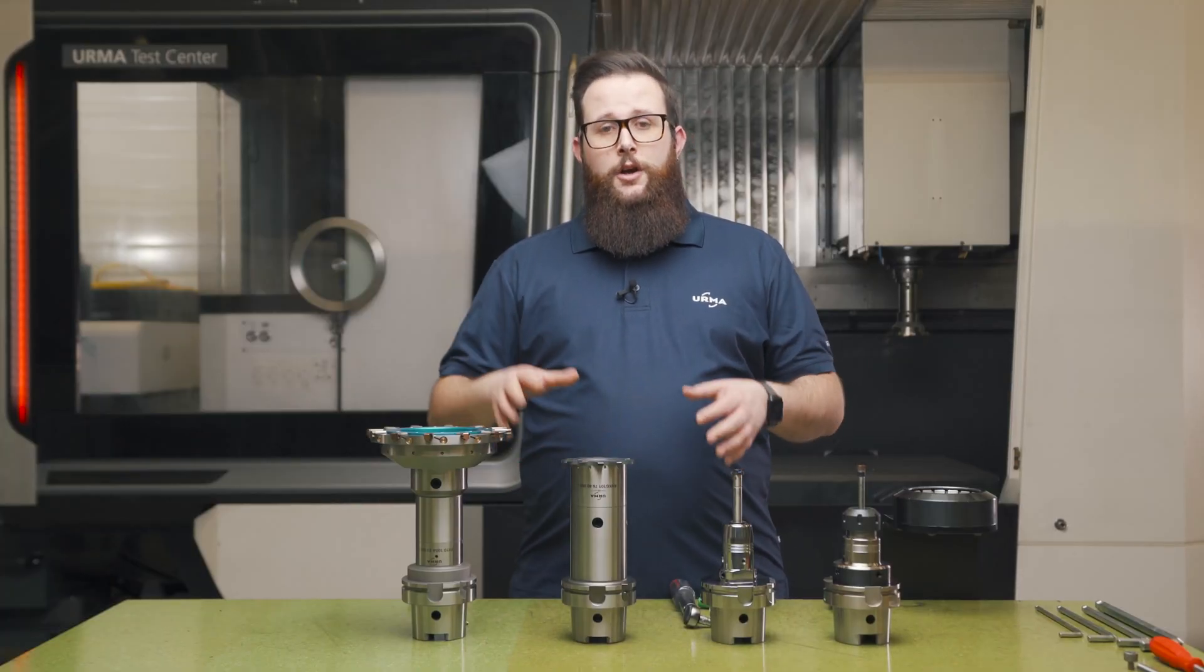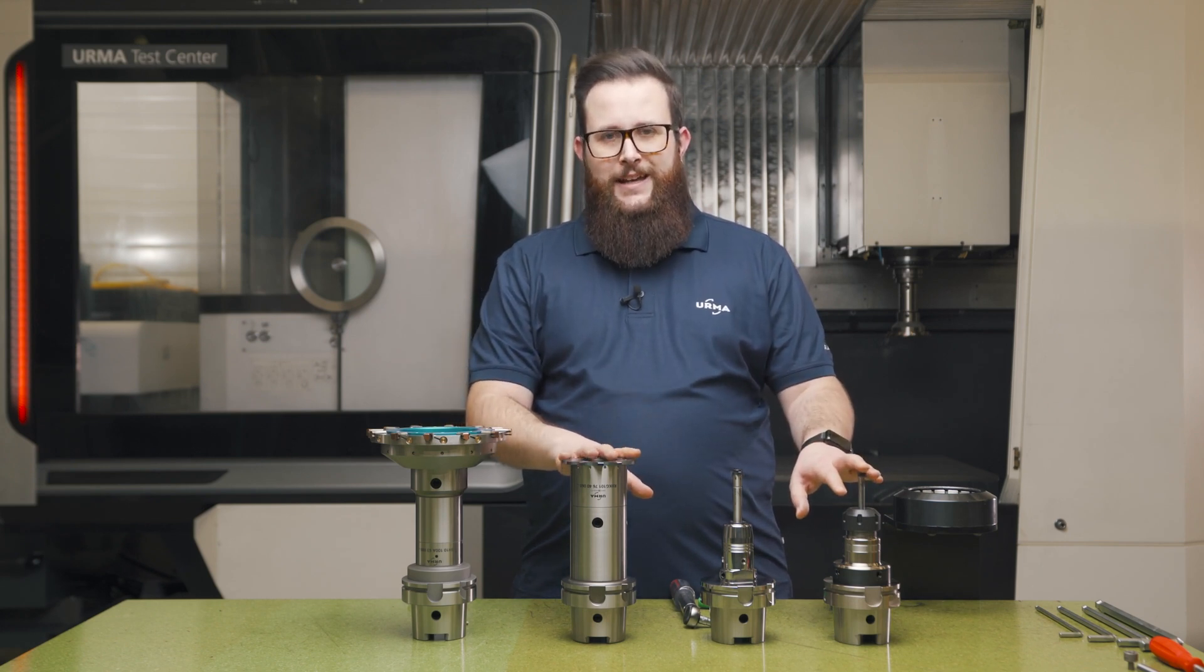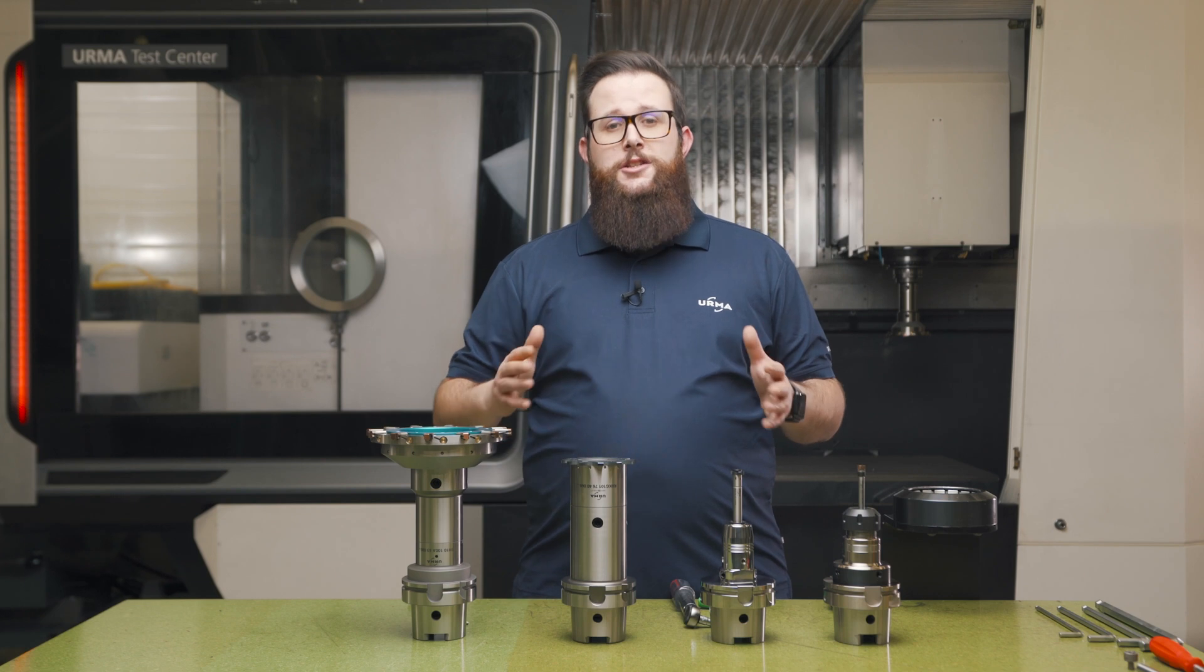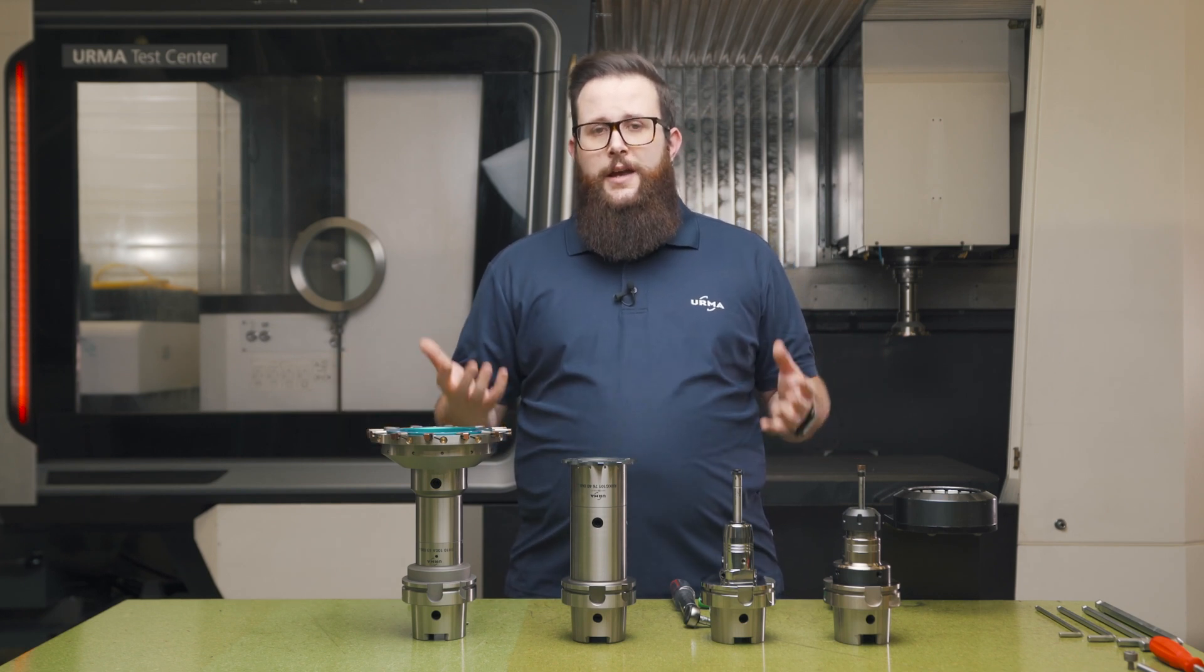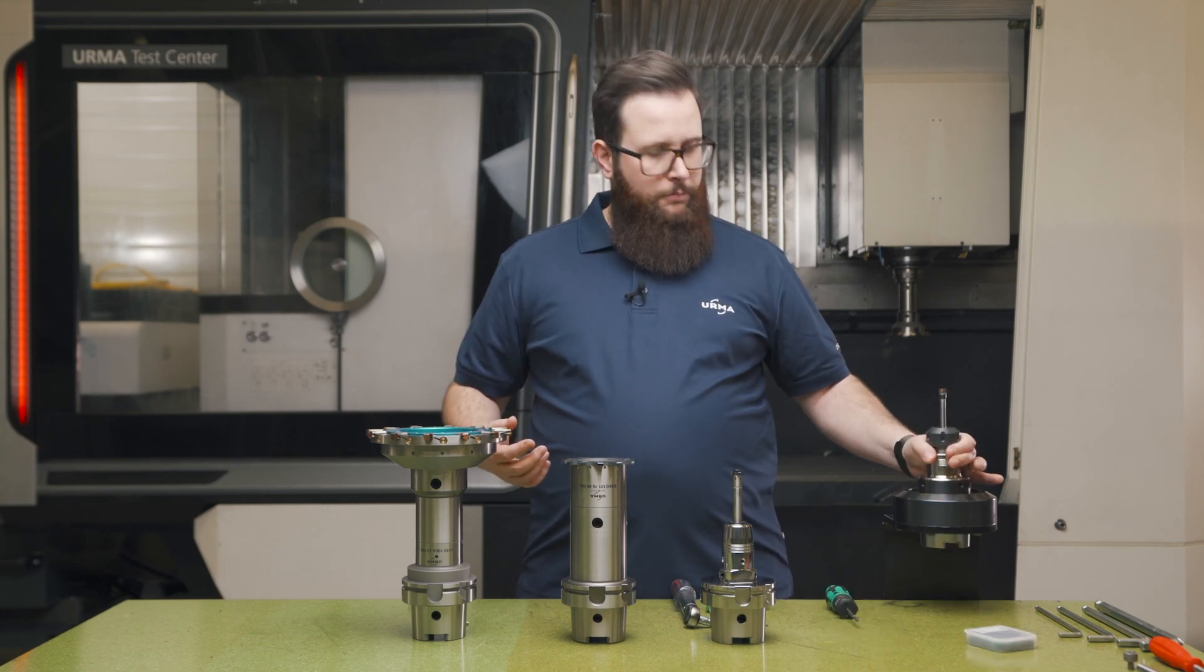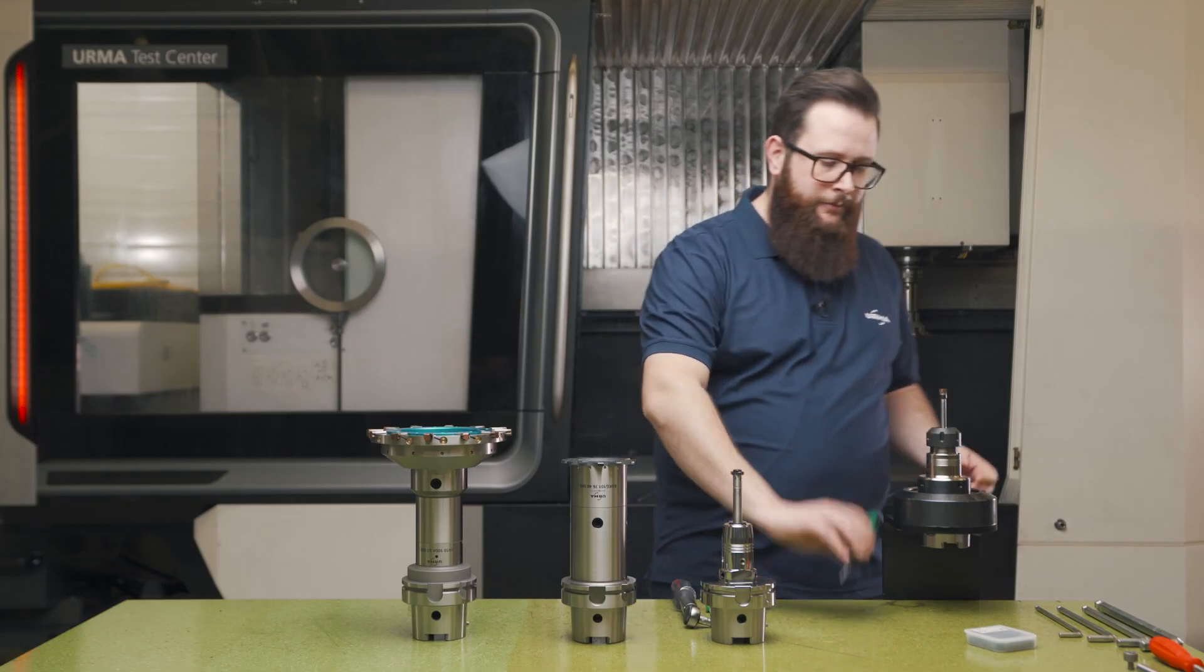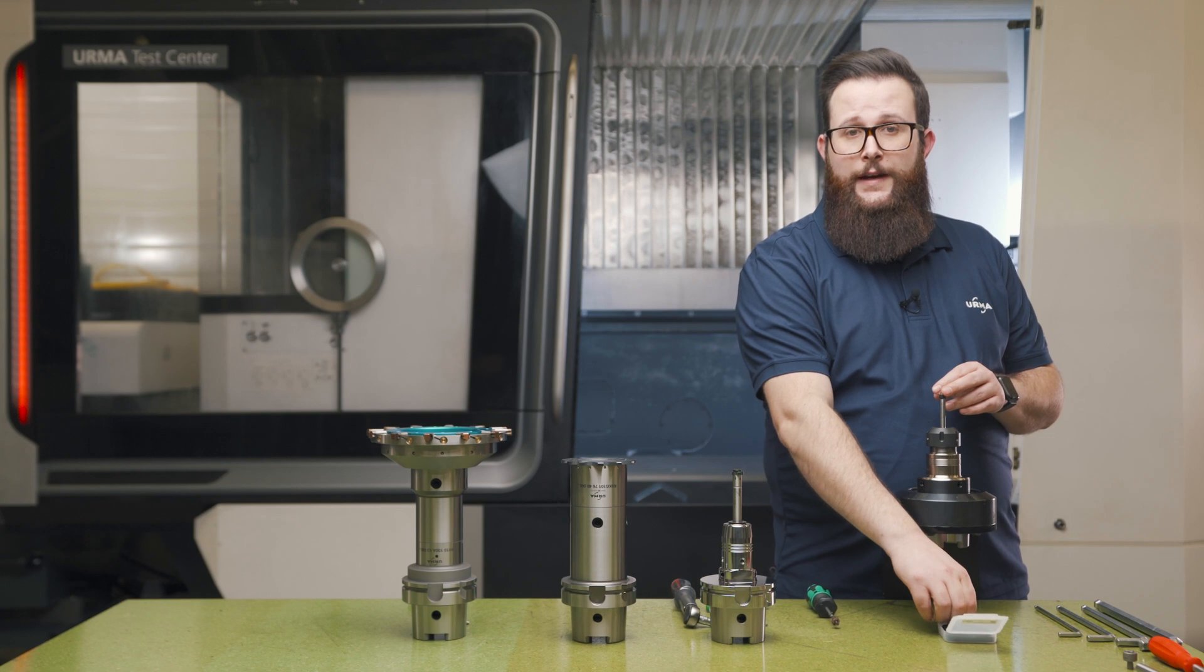Changing an insert on the RX system is as easy as it gets. It is as easy as changing a milling or a turning insert. So basically the first step of course is take your tool out of the machine, place it into a tool holder, disassemble your insert and clean your interface.